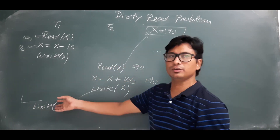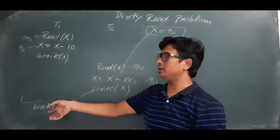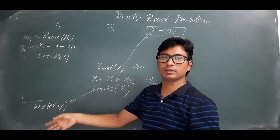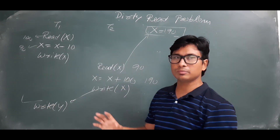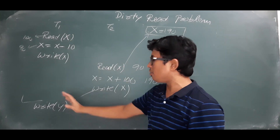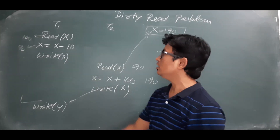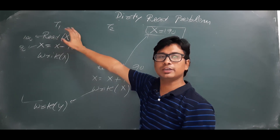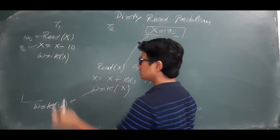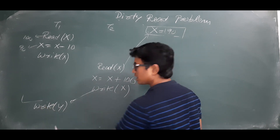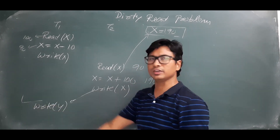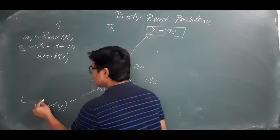Now listen carefully. Because of some problem, a failure occurred, so T1 has to roll back. Once a failure comes, what must it do? It has to roll back due to the atomicity property. The atomicity property says either you execute all operations in the transaction or none at all. T1 had executed three operations, but when trying the fourth it got a failure.